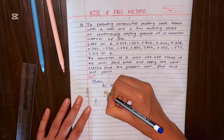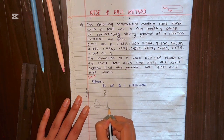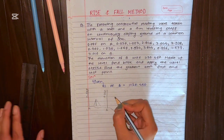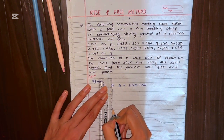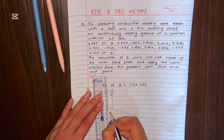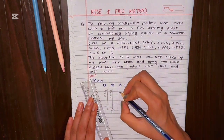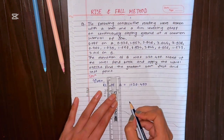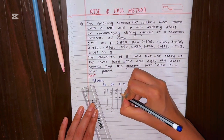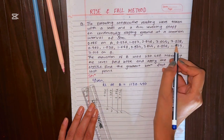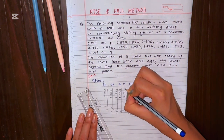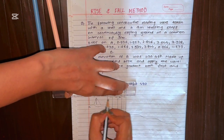The intermediate readings from the first instrument position are 0.936, then 1.953, then 2.846, then 3.644. The reading of 3.938 is the foresight for this instrument position — this is the last reading from the first setup, and since it is on sloping ground, the values increase progressively.